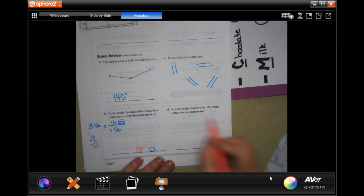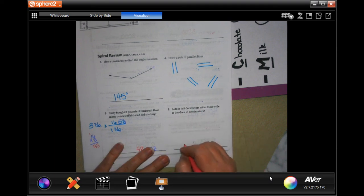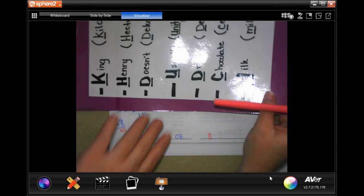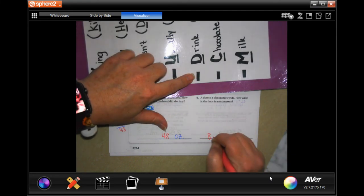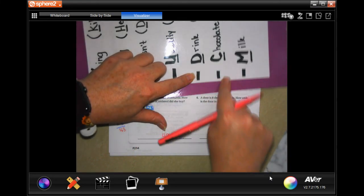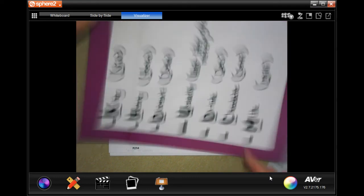The door is eight centimeters wide. How wide is the door in millimeters? So we're going to start with eight. We're just going to add on one zero because we're going to the right.